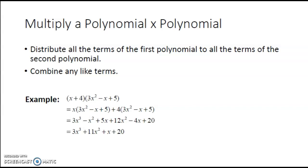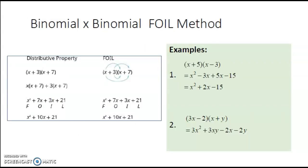The last thing we are going to look at is a special case of a binomial times a binomial. This can be done using the same distributive property method we just saw. But sometimes people like to use a mnemonic to help them remember how to multiply all of the different terms when working with binomials times binomials. However, this method is only for two binomials — it does not make sense to apply it to other sized polynomials.